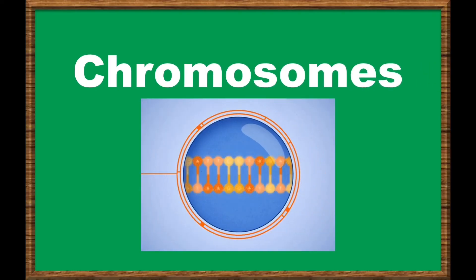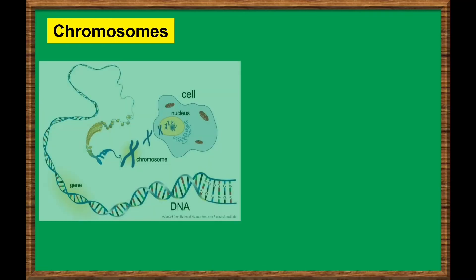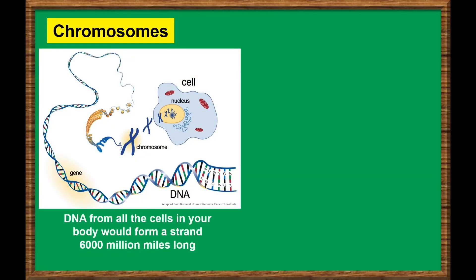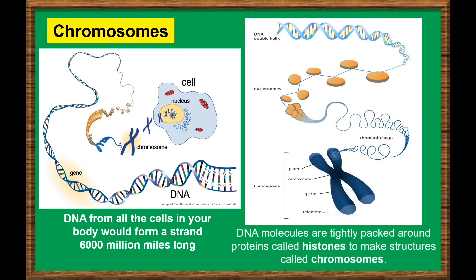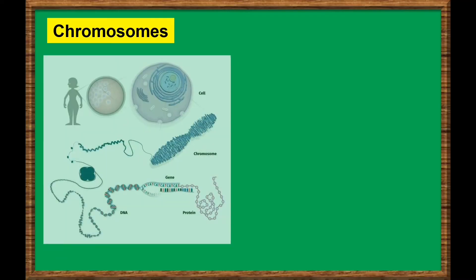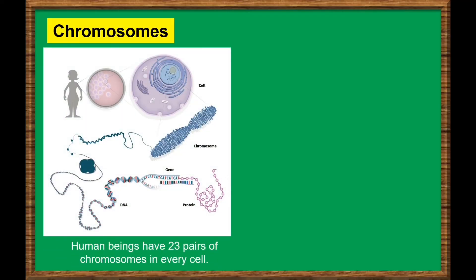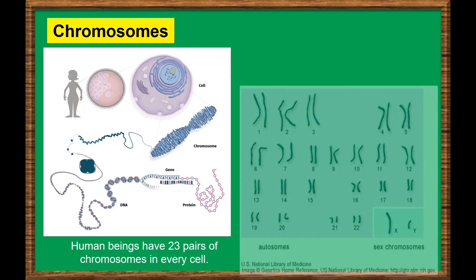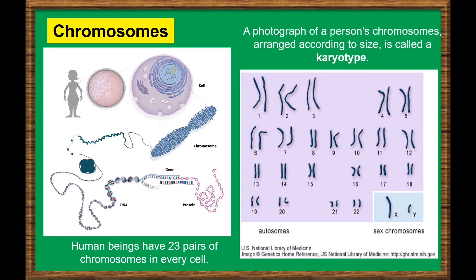Chromosomes. If you took the DNA from all the cells in your body and lined it up, it would form a strand 6,000 million miles long. To store this important material, DNA molecules are tightly packed around proteins called histones to make structures called chromosomes. Human beings have 23 pairs of chromosomes in every cell, which makes 46 chromosomes in total. A photograph of a person's chromosomes arranged according to size is called a karyotype. Since there are 23 pairs of chromosomes for humans, 22 of these pairs are considered autosomes, while the 23rd pair is the sex chromosomes, which determine whether you're a boy or a girl.